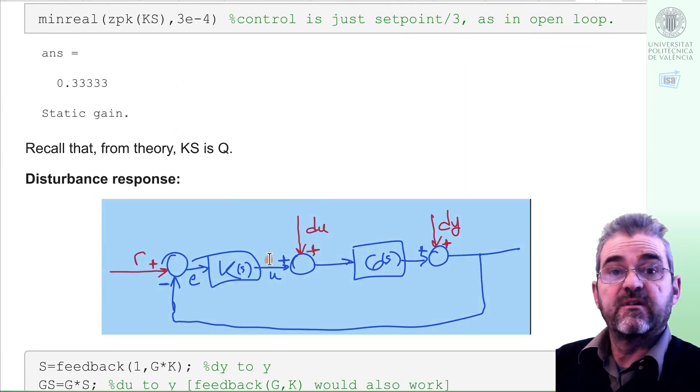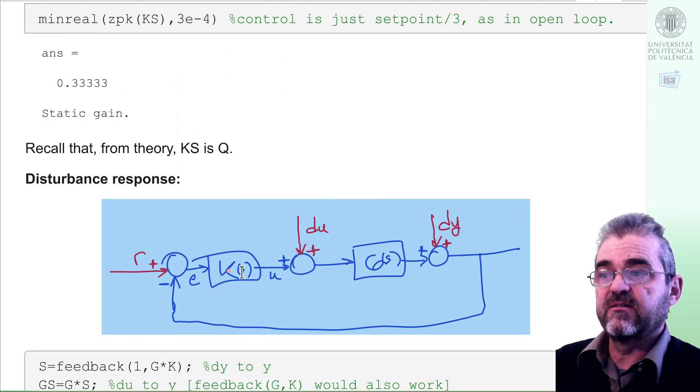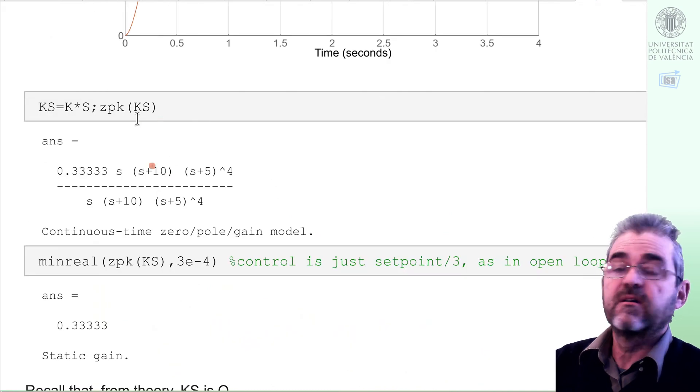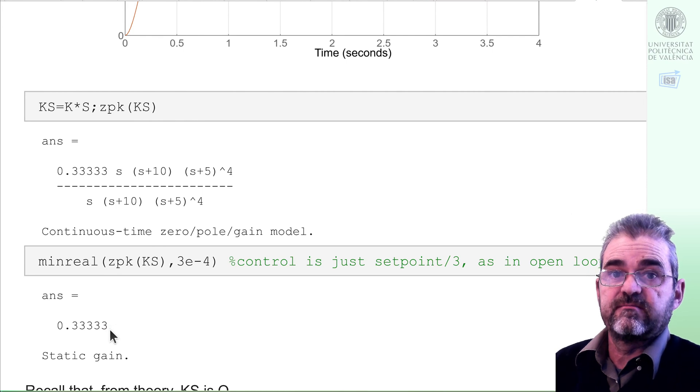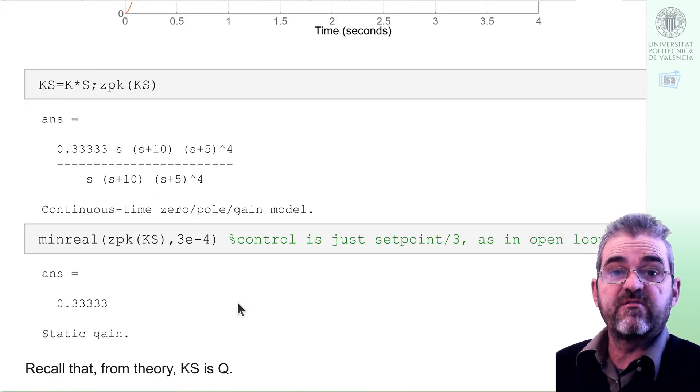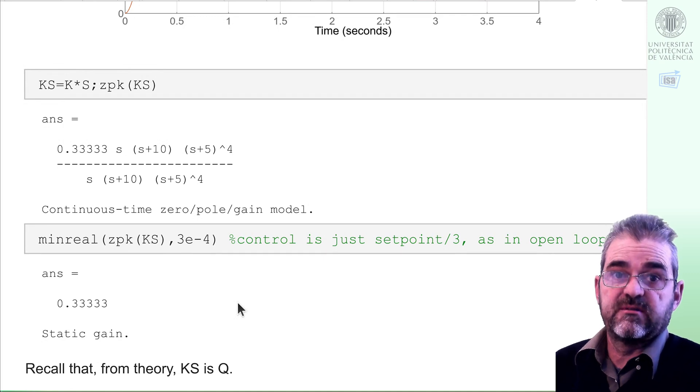If I compute the transfer function from setpoint to control, K over 1 plus GK, then doing some cancellations, it's exactly Q = 0.333. So from the setpoint point of view, IMC gives me the same result as open loop, and this was the theoretical motivation.